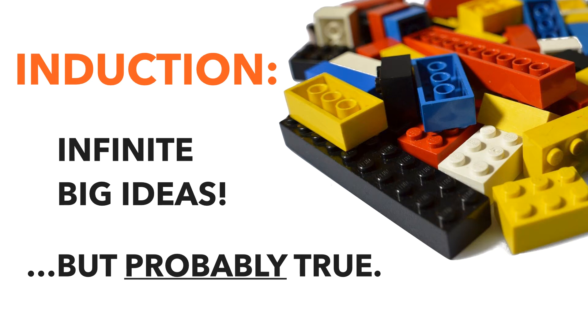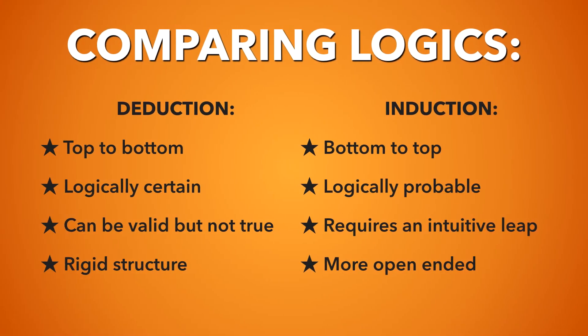Induction is expansive, but it also has a trade-off. Whereas deduction gives you airtight reasoning, induction only gives you probability — because you have to use your imagination to put the pieces together. How you use logic depends a lot on the kinds of information you use. Top-down is deduction, giving you a logically certain conclusion, but it can be valid without being necessarily true. Bottom-up is induction, which lets you create new knowledge, but it will be probable rather than certain, and it requires an intuitive leap of your imagination.